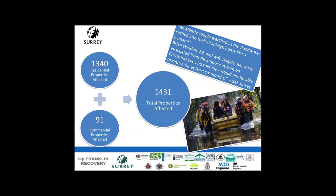The support plan quickly moved from evacuating people to reaching people in their own homes and supporting them there. There was a group of 74 4x4 owners who helped reach those people alongside the agencies, nicknamed by the press as the Shepperton Cavalry. So it really was a whole county council, local council, national agency and community response to the situation.